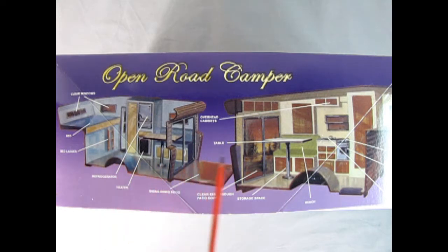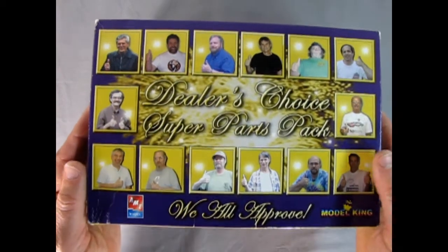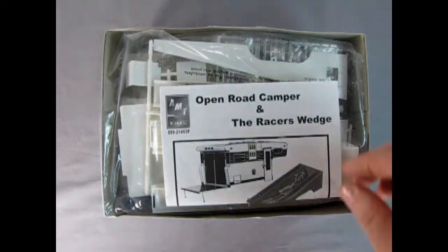Here we have the open camper on the side of the box and you can see a lot of great little details in here - tables and fridges and places to store stuff as well as the sleeping quarters. On the other side of the box we have the racer's wedge which includes things like the jacks, the oil cans and gas tanks, little jacks, tool boxes and all the different tools you need. So let's remove the lid of this box and then we can take a look at the parts.